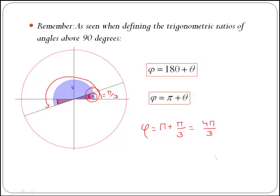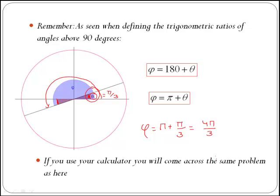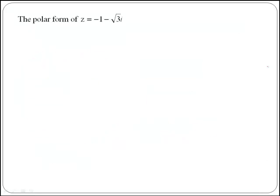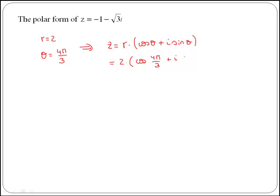And that is the actual angle of the complex number we were given at the start. If you use your calculator, you will come across exactly the same problem. Therefore, if we join all the information, we have that the modulus of this complex number is 2, while the argument theta is 4pi over 3. Then, the polar form of a complex number is given by r times cos of theta plus i sine of theta. Replacing r and theta, we get 2 times cos of 4pi over 3 plus i sine of 4pi over 3.